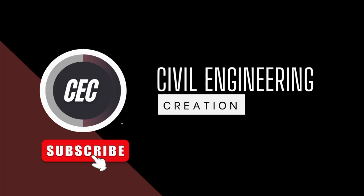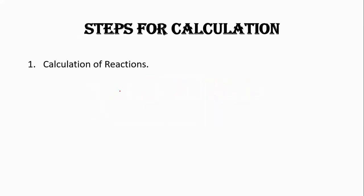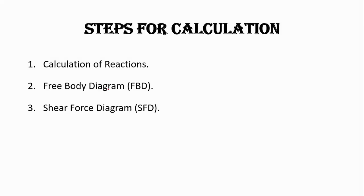Welcome to my YouTube channel Civil Engineering Creation. Today we will solve a cantilever beam with uniformly distributed load acting on it. We have a beam with a fixed support at one end — a cantilever beam of three meter length — and a uniformly distributed load of two kilonewtons per meter acting on it. First we will calculate the support reactions, then draw the free body diagram, shear force diagram, and bending moment diagram.